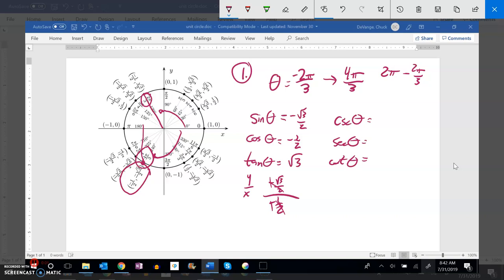And then the other reciprocal values are pretty easy to get at. If I look at secant, I can take the reciprocal of negative 1 half, so that's negative 2. Cosecant, take the reciprocal of sine. So that would be negative 2 over root 3. And if I rationalize that denominator, that's going to be negative 2 root 3 over 3. And then tangent is root 3, so cotangent would be 1 over root 3. Again, if I rationalize that, root 3 over 3. And there they all are.